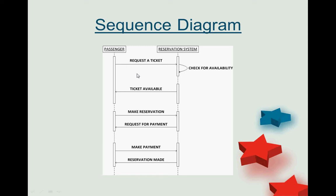Coming to the sequence diagram, it shows the transfer of messages. The passenger requests a ticket from the reservation system, which checks availability. If the reservation is available, it sends an acknowledgement that the ticket is available. The passenger then makes a reservation, the reservation system requests payment, the payment is made, and the reservation is complete.